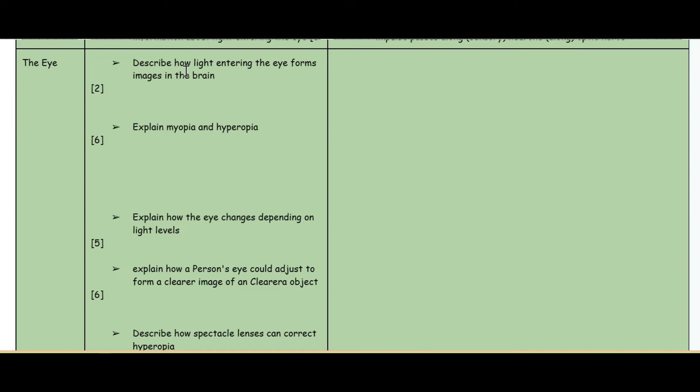Moving to the eye: describe how light entering the eye forms images in the brain. Firstly, it's focused by refraction by the cornea. Then you've got the image that's formed upside down and the brain then interprets that image the correct way. A lot of the detail that you need to put depends on the marks.